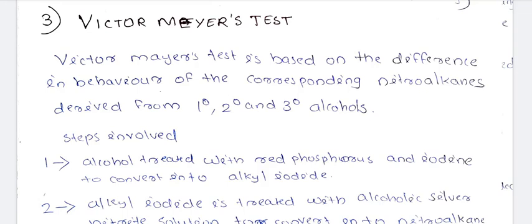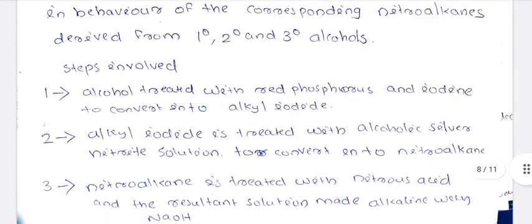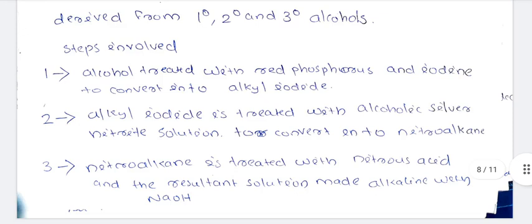We have discussed the previous video. We will not discuss Victor Meyer's Test fully in this video, but we will try to study it once more. Victor Meyer's Test is based on the difference in behavior of corresponding nitroalkanes derived from primary, secondary, and tertiary alcohols.